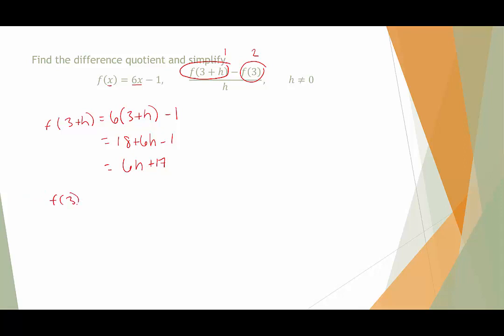Step 2, plugging in f(3). So this time, I'm going to go back to that function f. And anywhere I see an x, I'm going to replace it with a 3. This would be 6 times 3 minus 1. That's 18 minus 1, which is 17. So I've done steps 1 and 2.